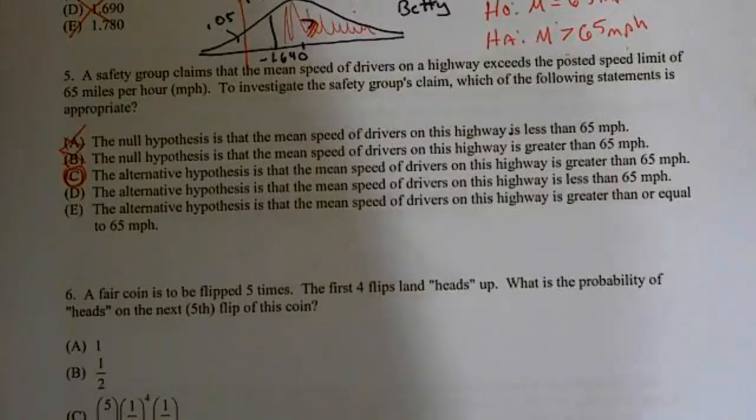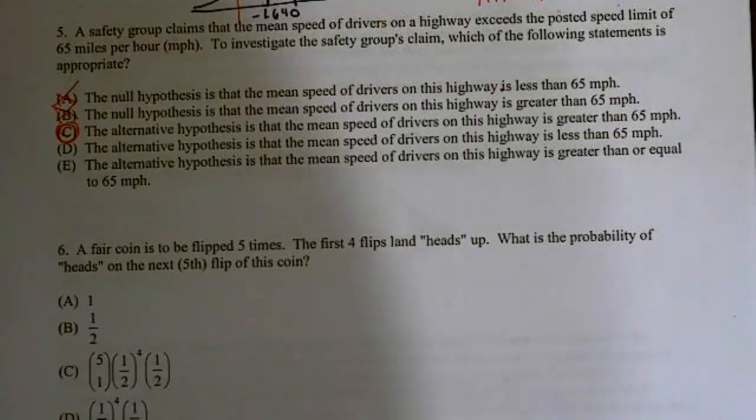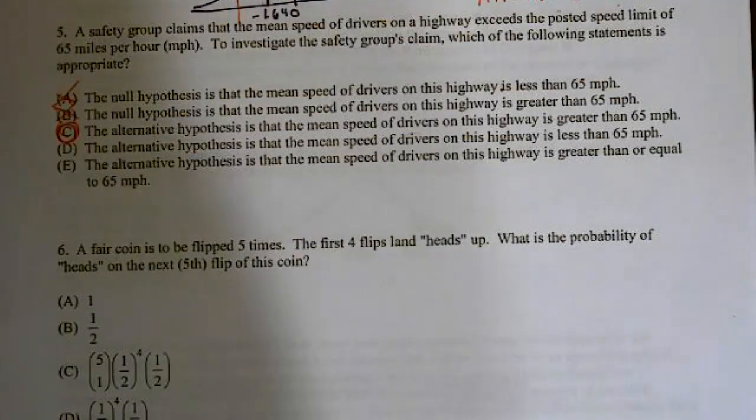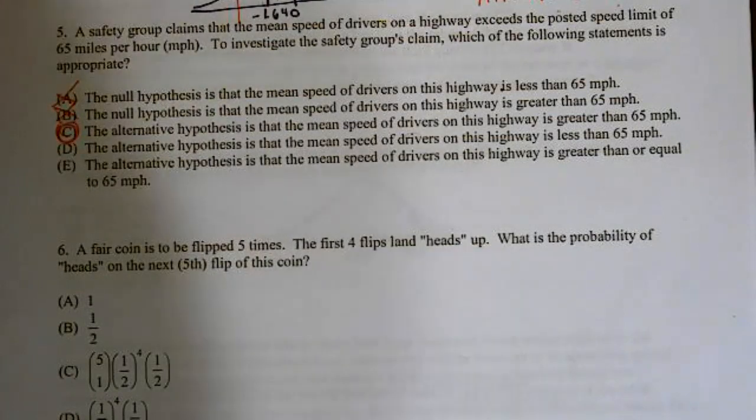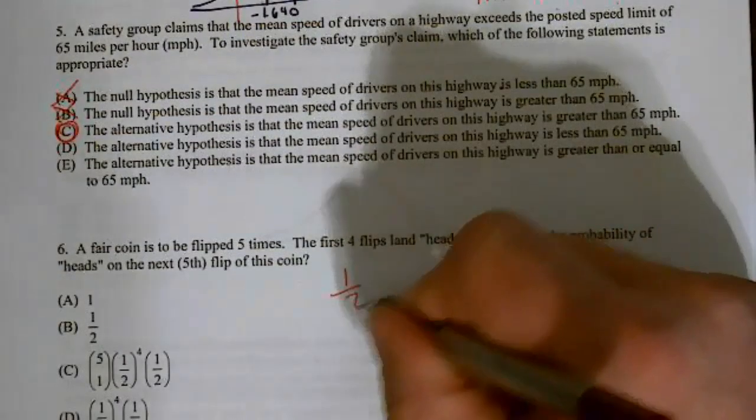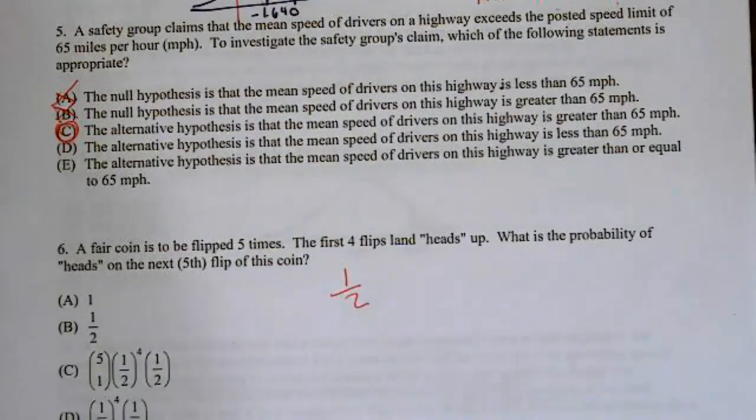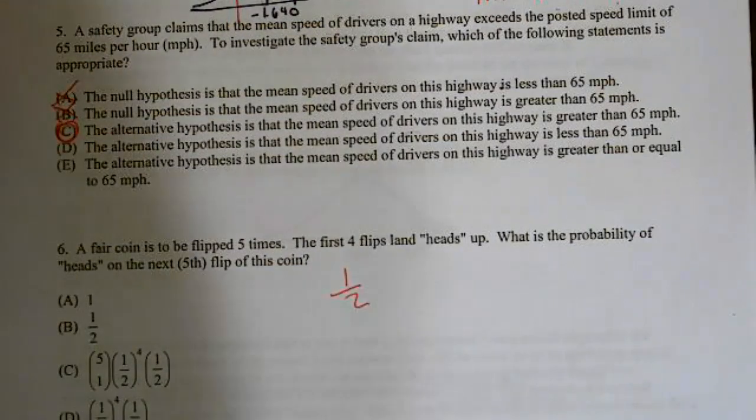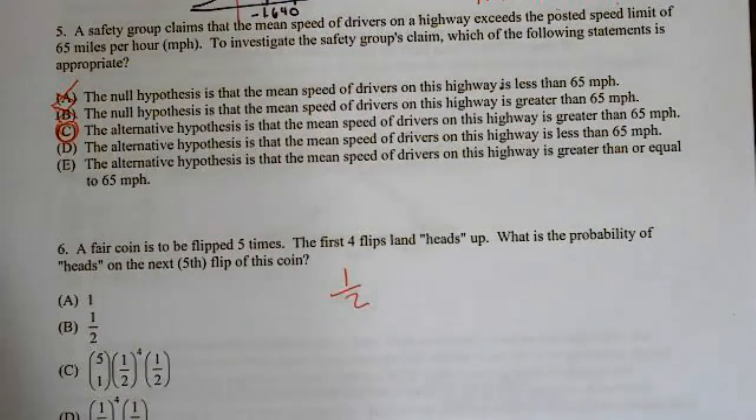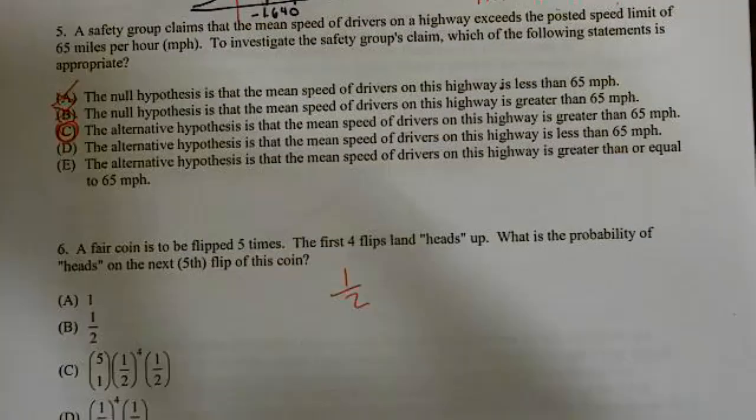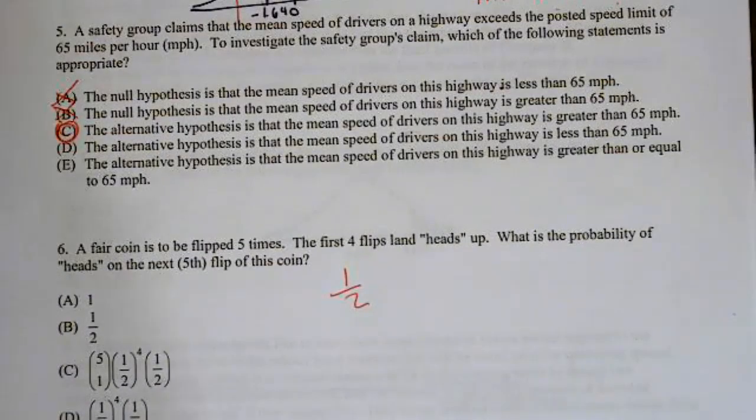A fair coin is to be flipped five times. The first four flips land heads up. What's the probability of heads on the next flip of the coin? Well remember, if it's a fair coin, all the flips are independent. So what's the probability of getting a heads? The probability of getting a head is one half.